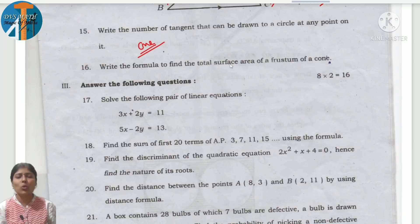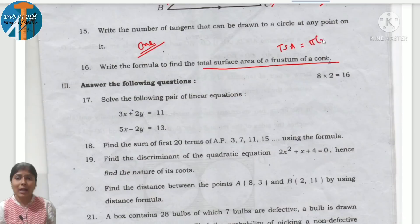Formula to find the total surface area of frustum of cone. TSA: pi(R1 plus R2)L plus pi R1 square plus pi R2 square.